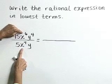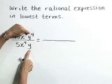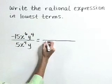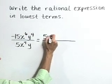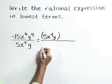With the x terms, each has a common factor of x to the fourth, and each has a common factor of y to the first. So let's factor 5x to the fourth y out of both the numerator and denominator.